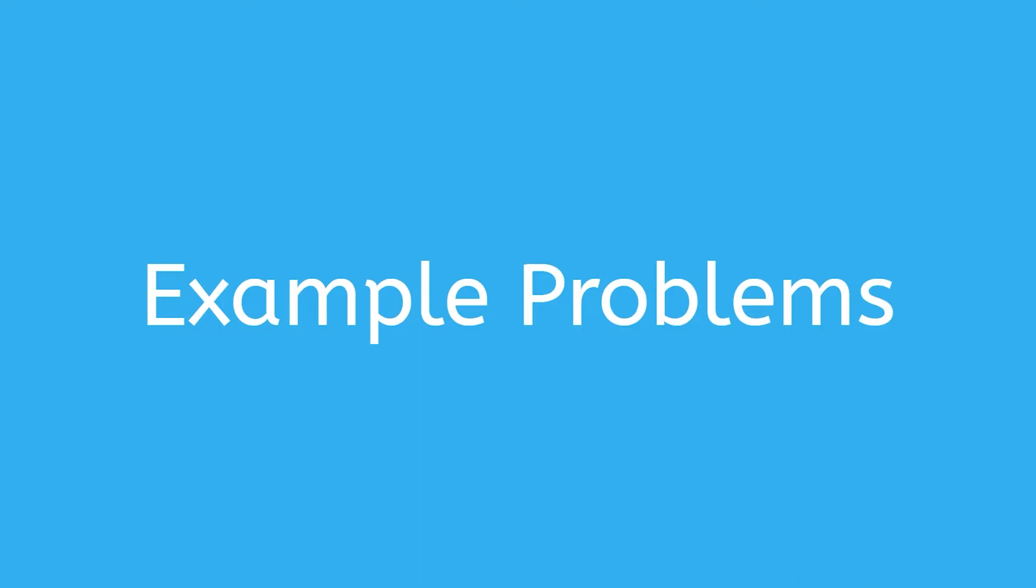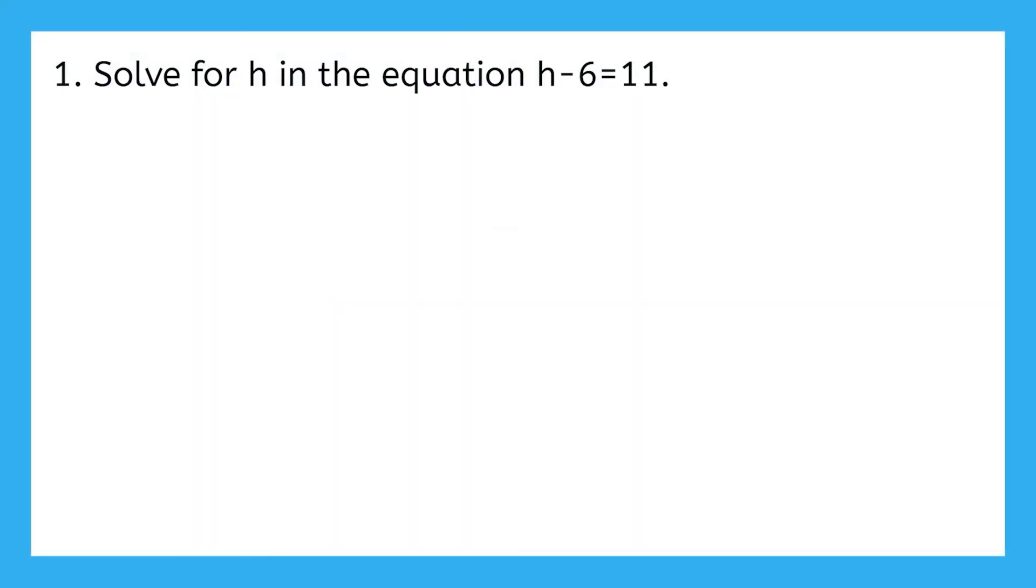Now that we have an idea of how to solve equations, let's do a few example problems together. Our first problem says to solve for h in the equation h minus 6 equals 11. Let me bring my equation front and center here. First, I need to figure out what is happening to h. I'm subtracting 6 from h right now, but I need to undo that. Think about your inverse operations. What will undo subtracting 6? The inverse would be adding 6. So now that I know what I need to do to get that h by itself, I need to actually do it.